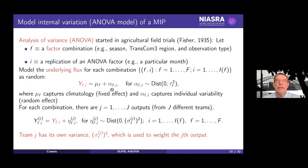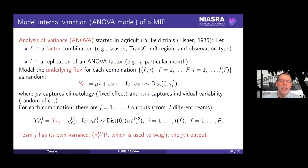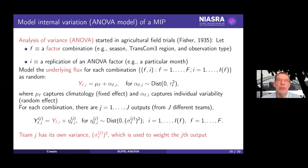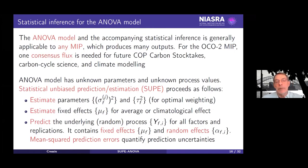We would model the underlying flux for each of these combinations as some climatological component — MU_F — plus a random effect, essentially a deviation from the climatological component, with distribution having mean zero and variance tau_F squared. For each combination there are J outputs, so we need to enhance the notation: Y_FI^j is the consensus flux plus some error with a distribution. Importantly, team j has its own variance. The straight average would assume somehow that all the variances are equal, which we'll see is not the best thing to do.